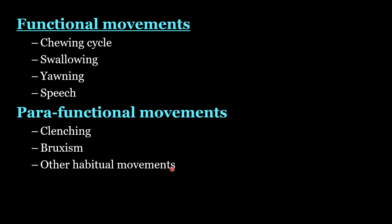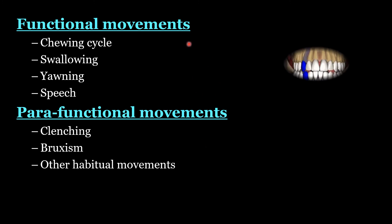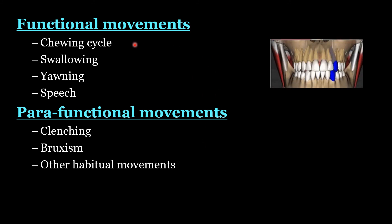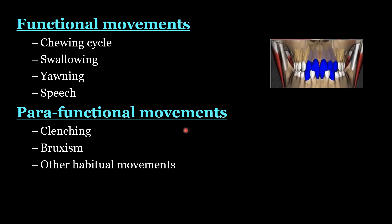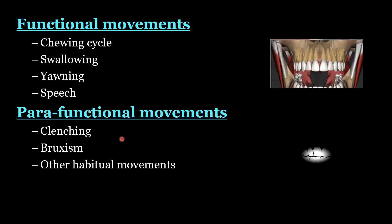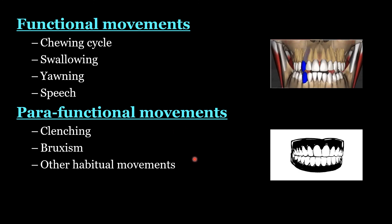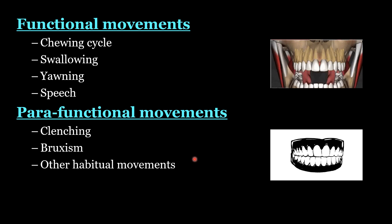The intra-border movements can be functional movements or para-functional movements. Functional movements include chewing, swallowing, yawning, and speech. Para-functional movements include clenching, bruxism, and other habitual movements. All of these occur within the envelope of motion.